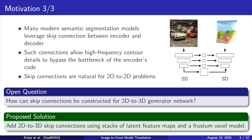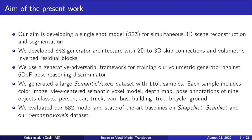Inspired by modern view-based single photo 3D construction models, we propose to add 2D-to-3D skip connections using stacks of latent feature maps and a frustum voxel model. The objective of the present work is fourfold. Our aim is developing a single-shot model for simultaneous 3D scene reconstruction and segmentation. We developed a new generator architecture with 2D-to-3D skip connections and volumetric inverted residual blocks, with a generative adversarial framework for training our volumetric generator against a fixed 6DOF pose reasoning discriminator.